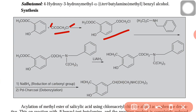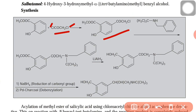Acetophenone is C6H5-CO-CH3. This is a phenyl unit and this is the acetyl unit CH2CO. Instead of CH3, one chlorine substitution is there. So it is a derivative of acetophenone.